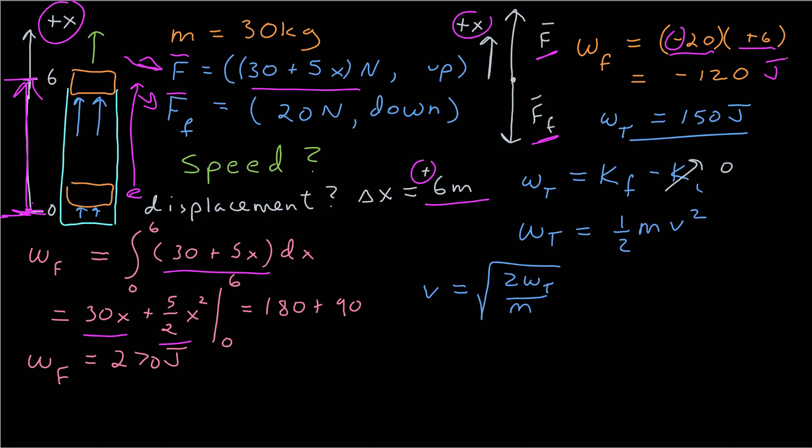I can solve for v then, twice times the work divided by the mass. Now I can go ahead and plug in numbers. 2 times 150 over 30. So 300 divided by 30 in the square root cancel is 0, and the velocity looks to be the square root of 10 meters per second.